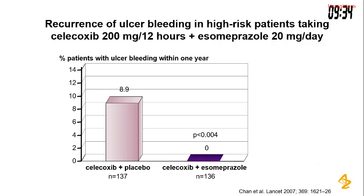Looking at patients who had COX-2 inhibitor plus placebo, the re-bleeding rate was about 9%. In patients who had COX-2 inhibitor with esomeprazole, the re-bleeding rate was 0%. So even in high-risk patients, if they are on NSAIDs, they should be managed with esomeprazole.